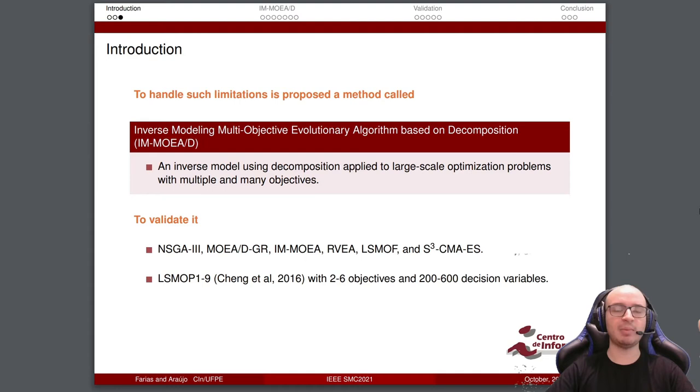The contribution of this work is we have an inverse model used in decomposition in the selection process, and we have applied it to large-scale optimization problems with multiple and many objectives. To validate it, we compared with six state-of-the-art MOEAs: NSGA3, MOEA-D-GR, IM-MOEA, RVEA, LSMOF, and S3-CMAES.